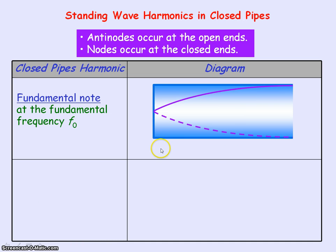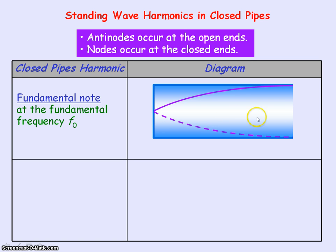If we now consider a closed pipe — that is, a pipe that is open at one end and closed at the other — when a sound wave is sent down the pipe, at the closed end the sound wave will be reflected. So you'd have the incident wave and the reflected wave interfering to produce a standing wave in the closed pipe.